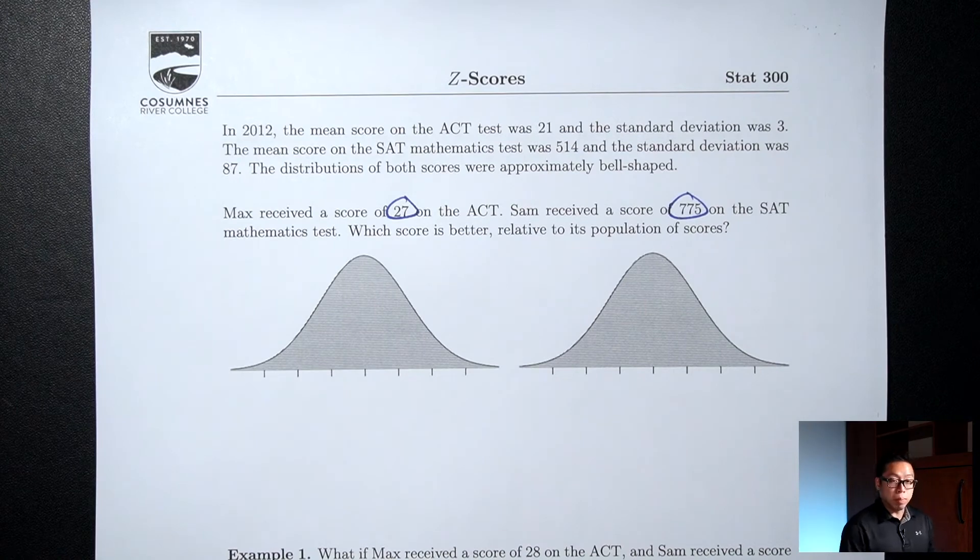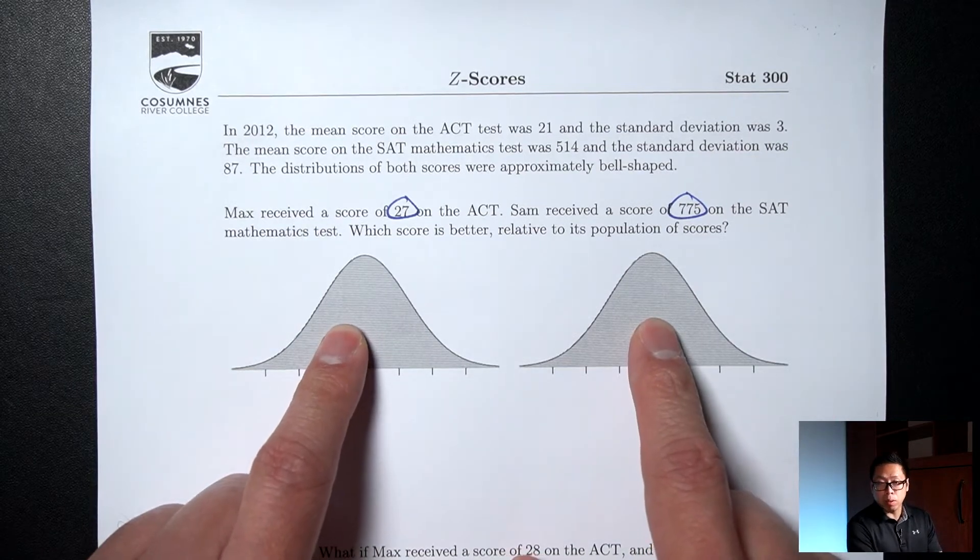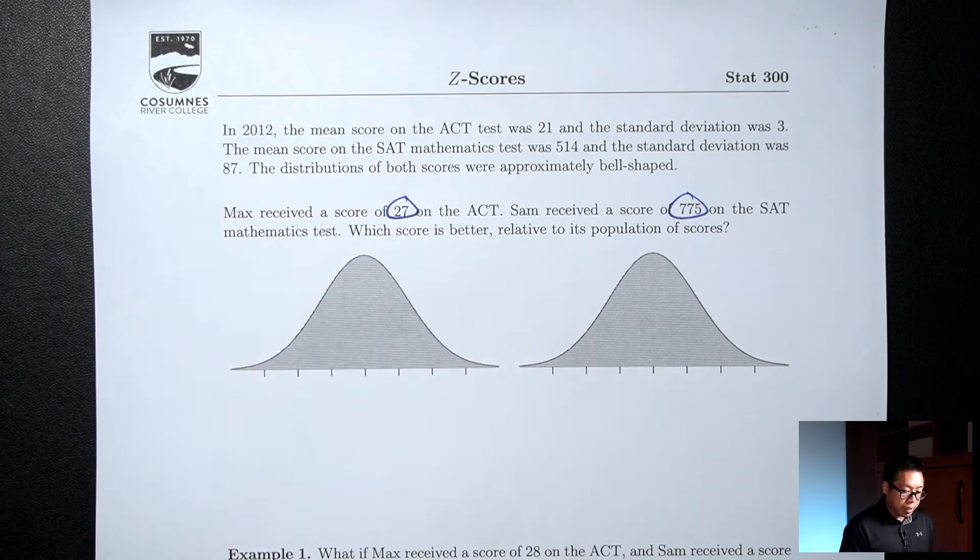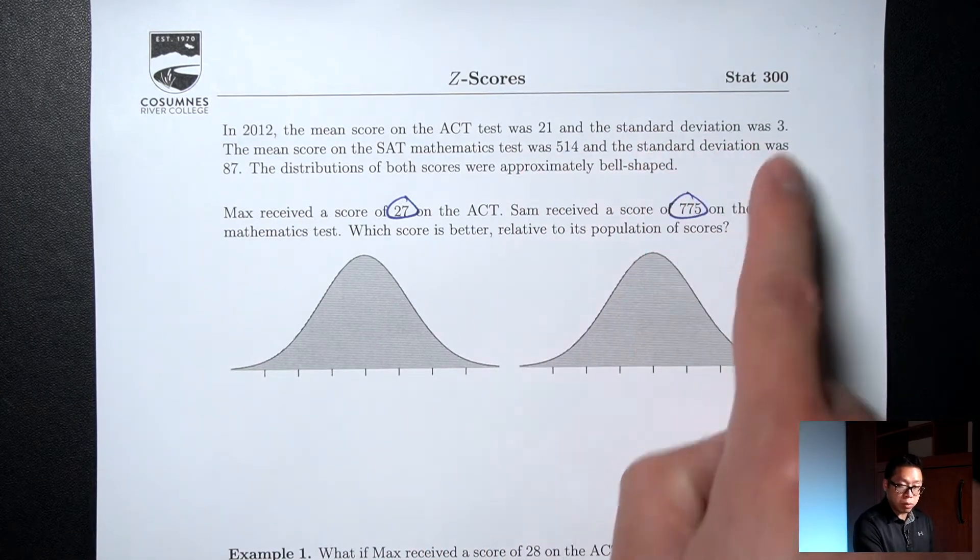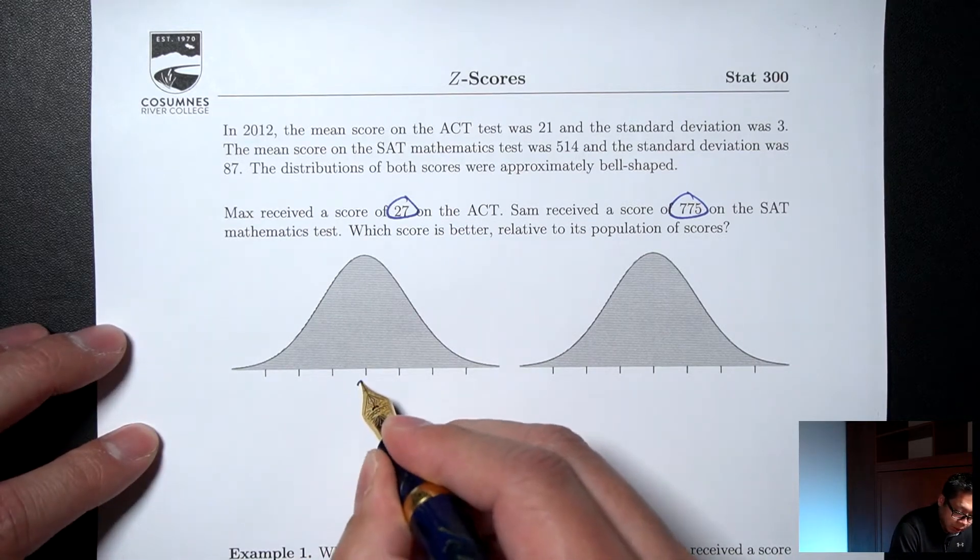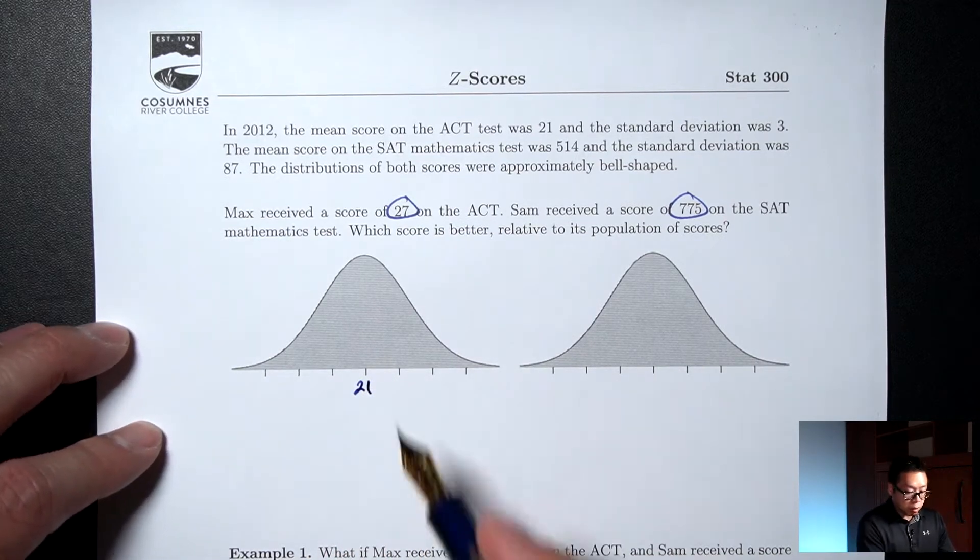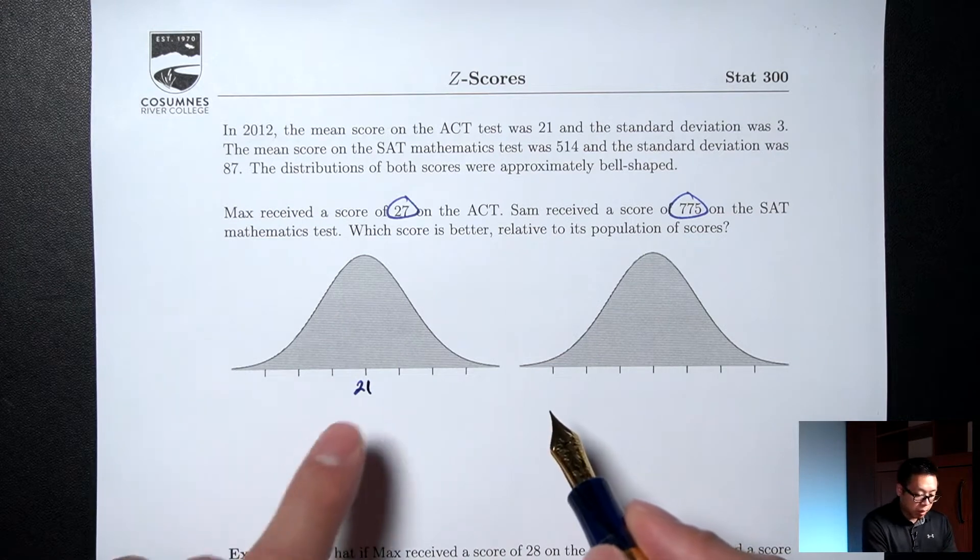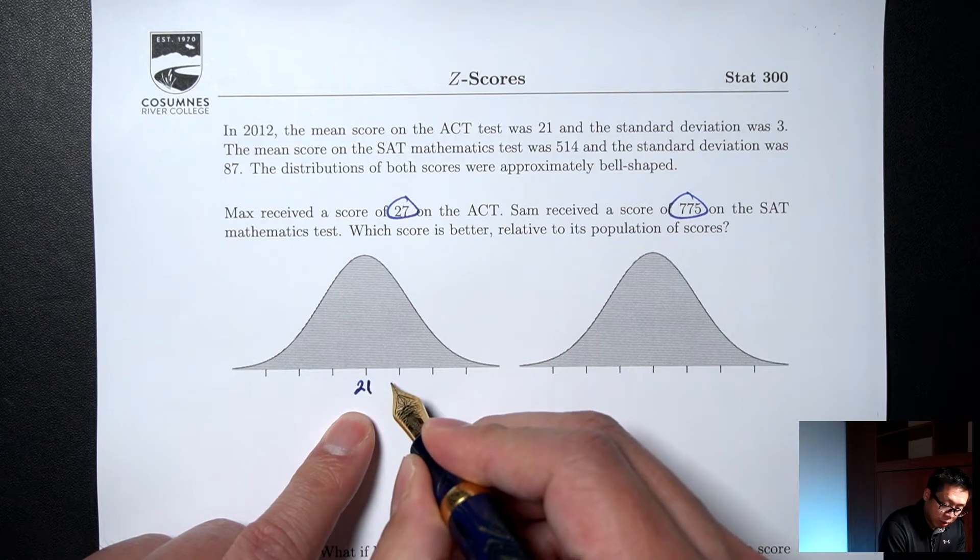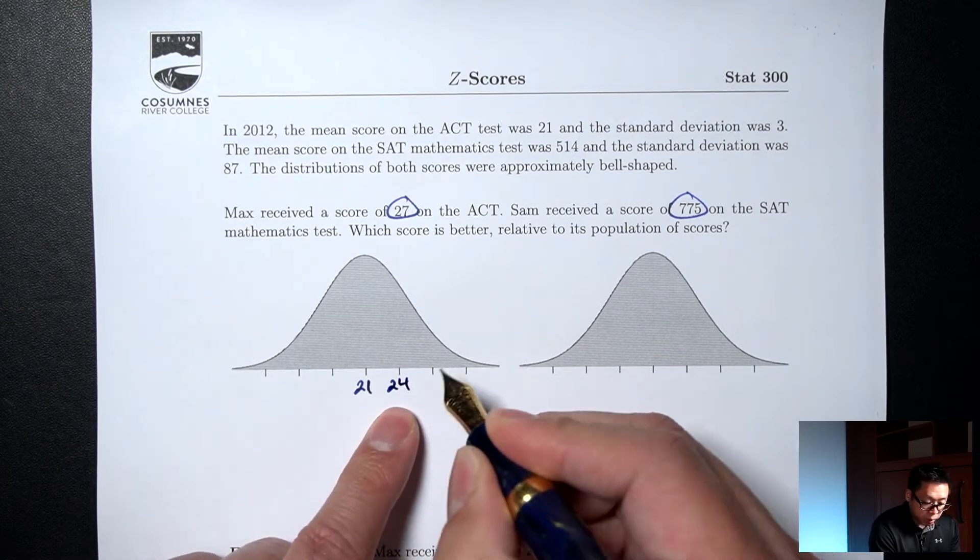We're told at the top here the mean and standard deviation of both tests. If you know the mean and standard deviation, we can always make the empirical rule picture. So let's make the empirical rule picture for both situations. We're told that the mean for the ACT was 21 and the standard deviation was 3. Put the mean in the middle and then use the standard deviation to go up 3 times and down 3 times. So 21 plus the standard deviation which is 3 would be 21 plus 3 is 24.